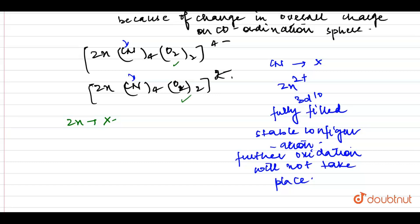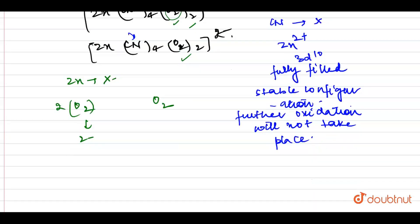So, we have only the O₂ element changing. O₂ and O₂ — this is the overall charge change. If I talk about the first case, CN was 4 minus and Zn was plus 2, so it was a 2 minus charge overall.